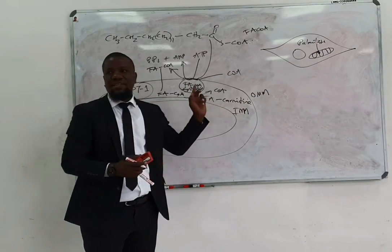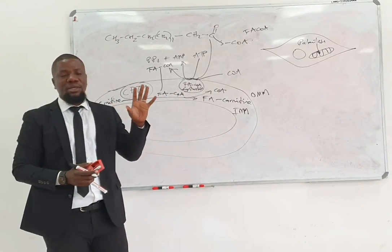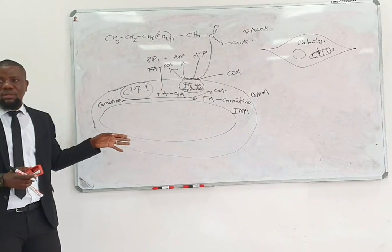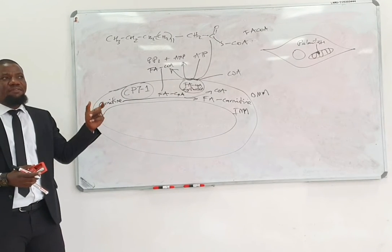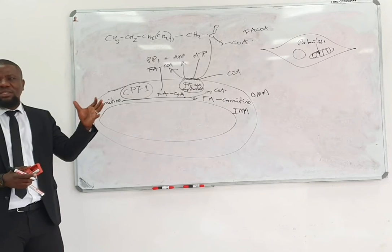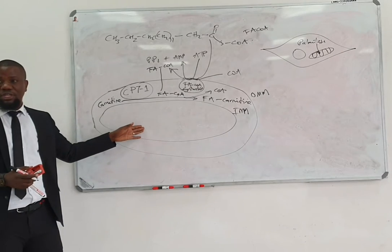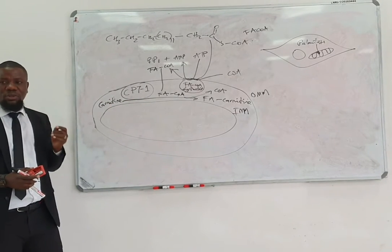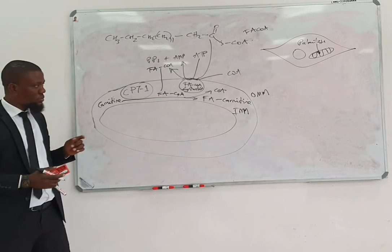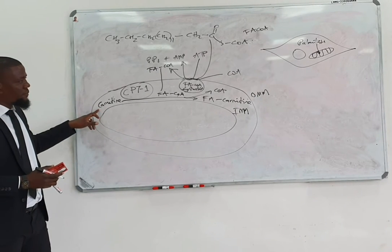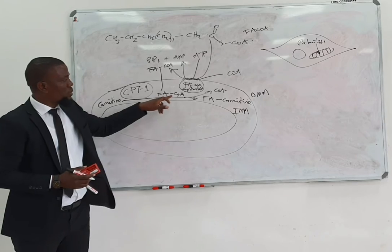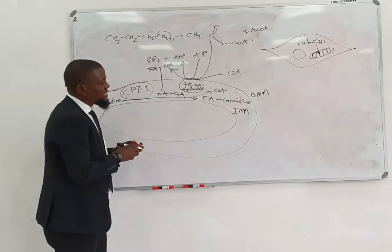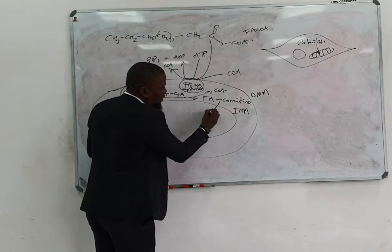If it is a long-chain fatty acid with more than 12 carbons, it would still need the binding of carnitine — it won't just cross on its own. Short-chain fatty acids which have less than 12 carbons are able to diffuse freely. If it is above 12 carbons, it will need to bind carnitine in order to get through. So this carnitine will bind to the fatty acyl-CoA to form a fatty acyl-carnitine, and it is the fatty acyl-carnitine which will then cross the membrane.